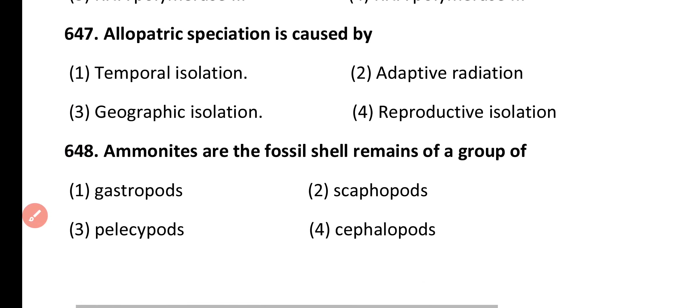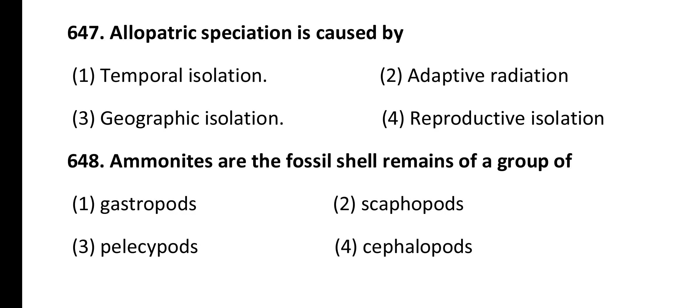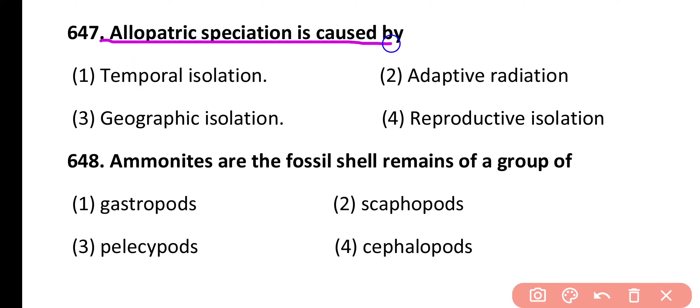Question 647. Allopatric speciation is caused by: temporal isolation, adaptive radiation, geographic isolation, reproductive isolation. Correct answer is option 3. Allopatric speciation is caused by geographic isolation.